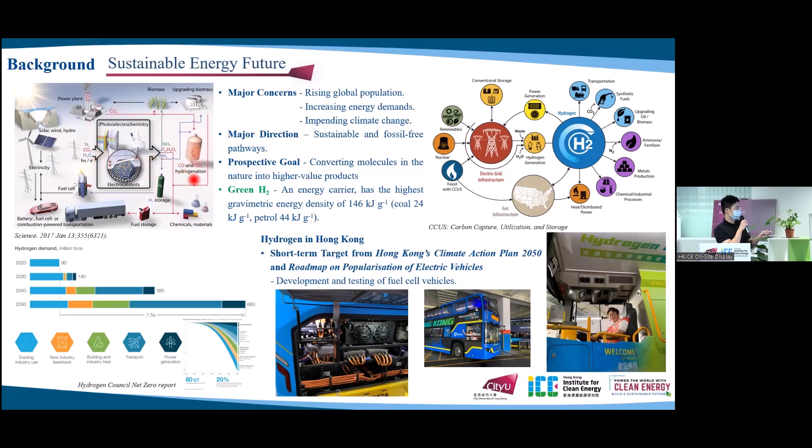Among them, hydrogen as an energy carrier has the highest gravimetric energy density of 146 kJ per gram, which could be applied to store, move, and deliver energy produced from other resources. It could be directly used in the fuel cell to produce zero-emission electricity, and other applications like upgrading biomass, metal production, and so on. Therefore, it has great application potential in the future.